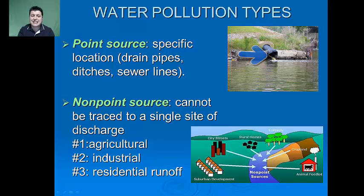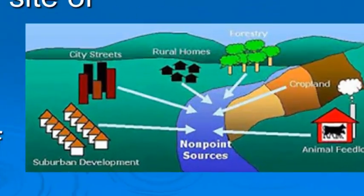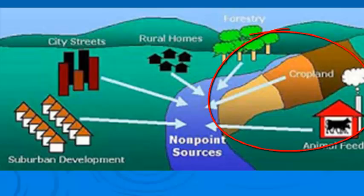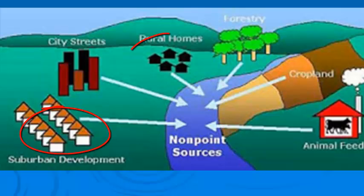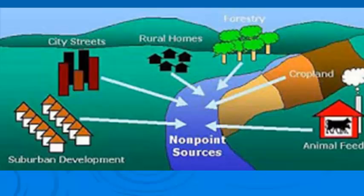Non-point sources can't be traced to a single site of discharge; they come from multiple areas discharging pollution into bodies of water. Our number one non-point source water pollutant is agriculture — excess fertilizers and animal waste that wash off when it rains. Number two is industry, and third is residential runoff: oil and antifreeze from parking pads, pet waste, and excess fertilizer from lawns that all make their way into waterways.